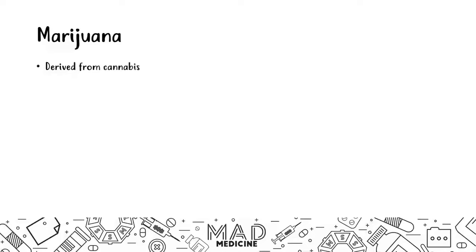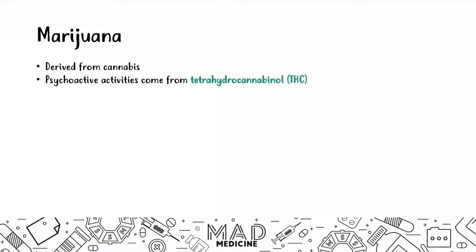Marijuana has psychoactive activity, all because of one substance called tetrahydrocannabinol — THC. This is the psychoactive component of marijuana, and that's what you need to know for Step 1. What it does is stimulate the cannabinoid receptors in the CNS. THC is the main psychoactive portion of marijuana.